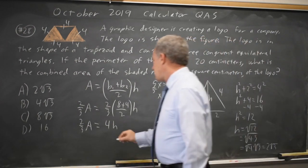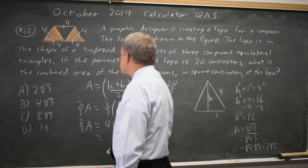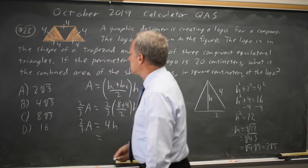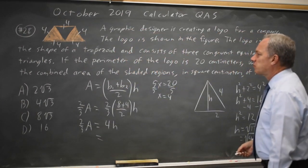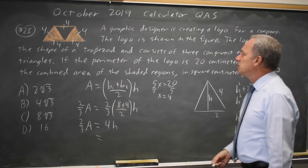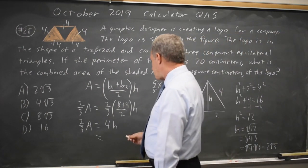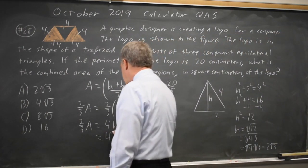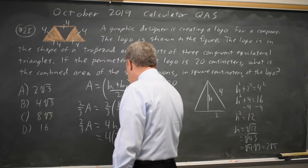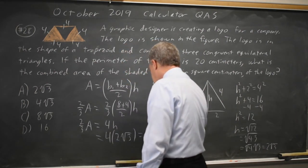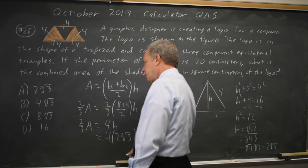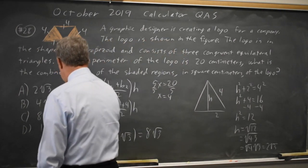So this is 2 thirds of the area of the entire trapezoid, which is the quantity we're looking for, because they say the combined area of the shaded regions, which is 2 of the 3 triangles. 4 times h is 4 times 2 root 3 is 8 root 3, choice C.